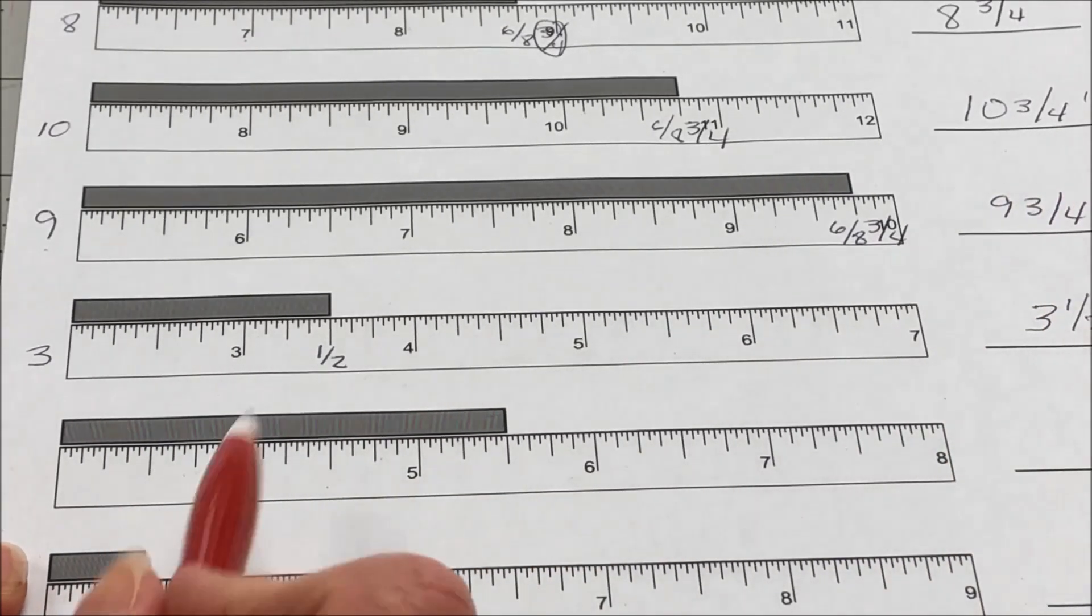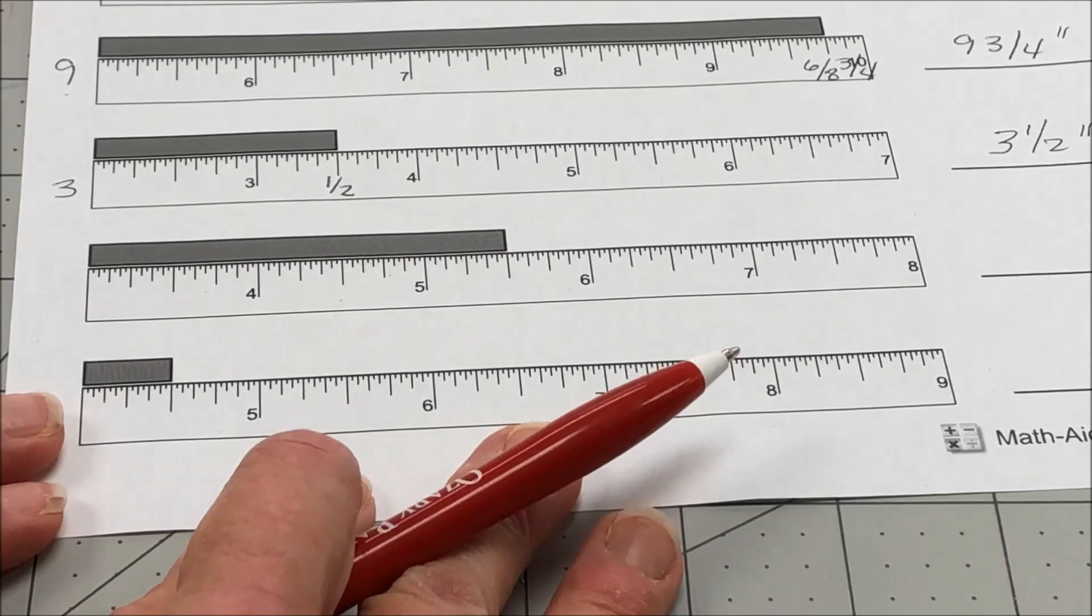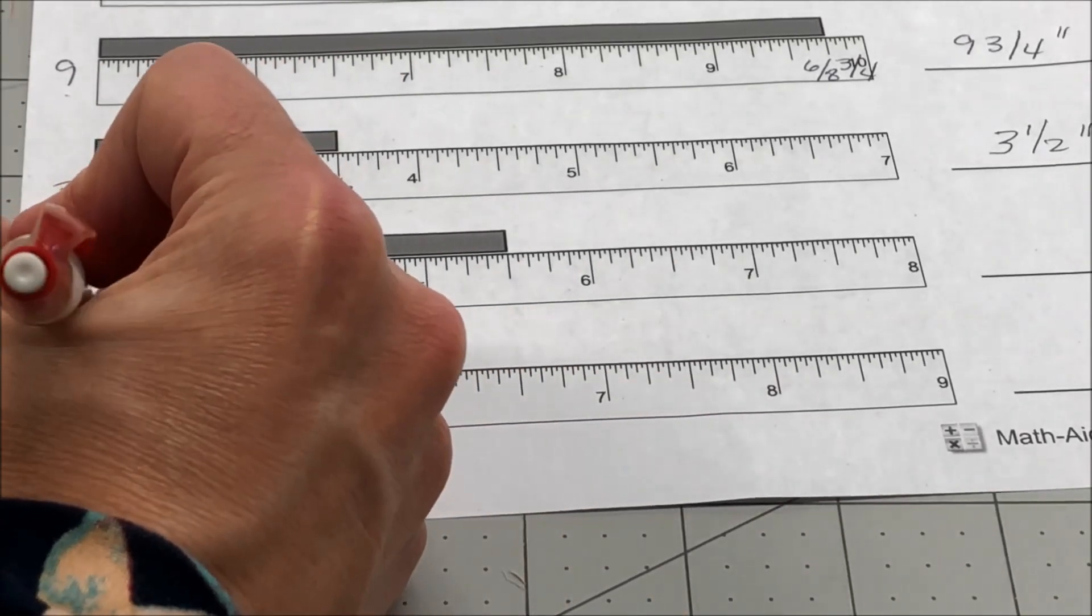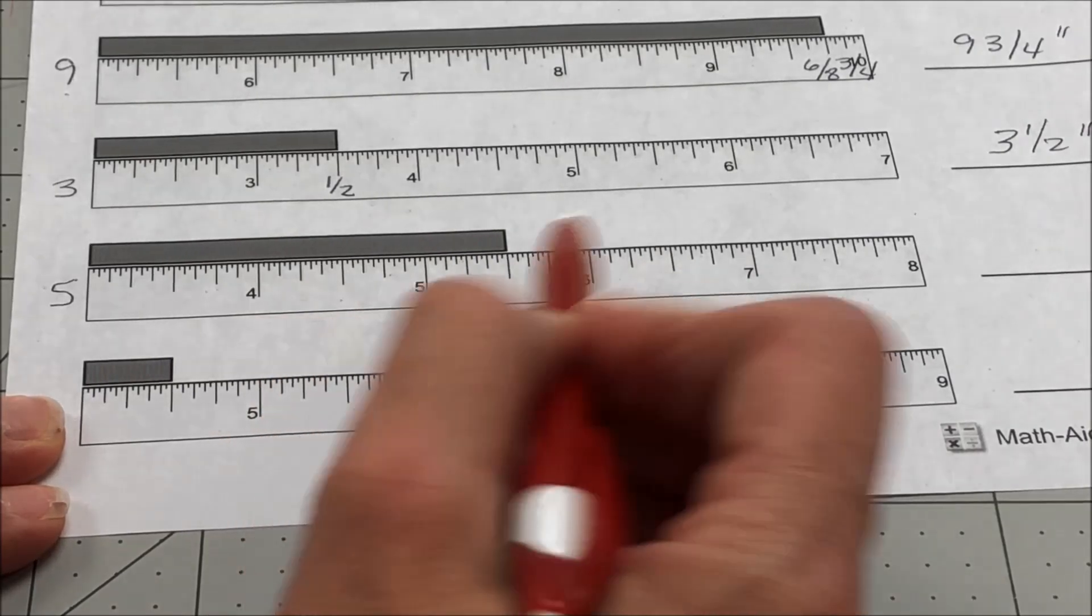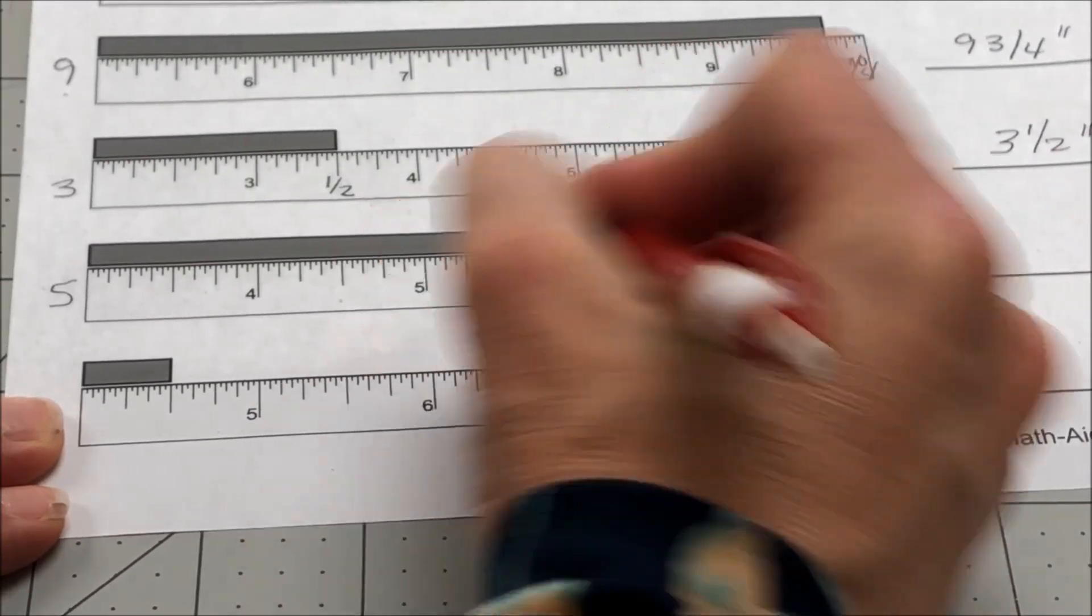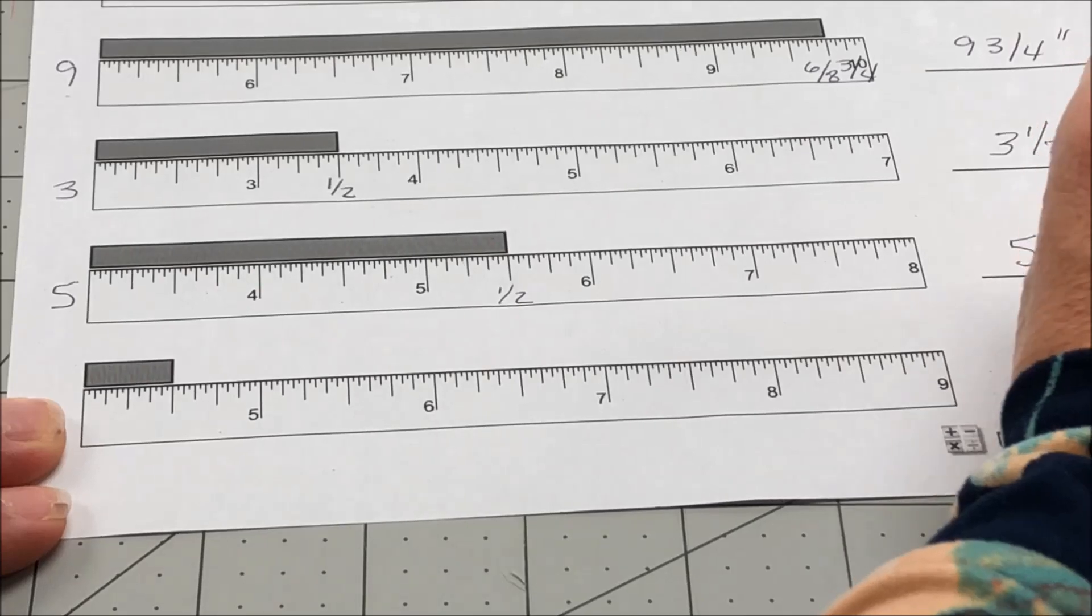The next one is going to be a 5. And it's got an 8th, a quarter, 3/8ths and a half. So that will be 5 and a half inches.